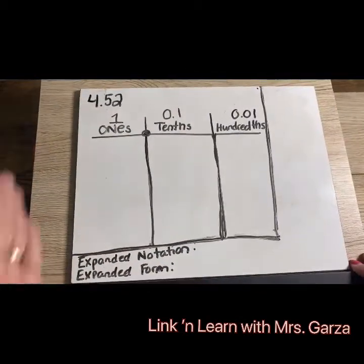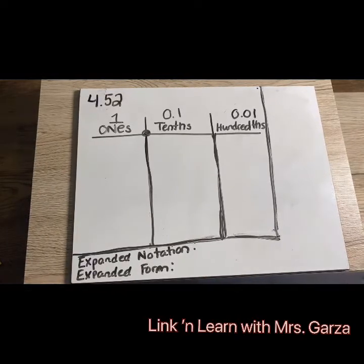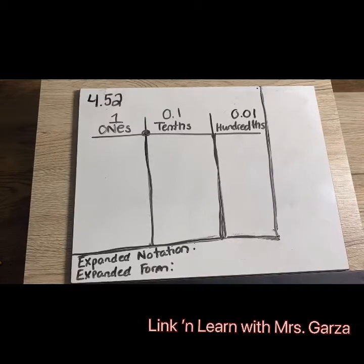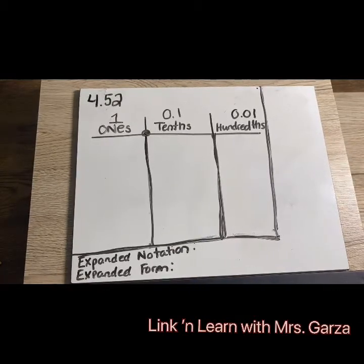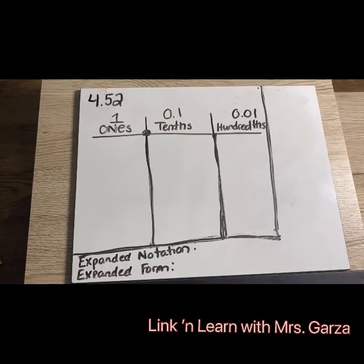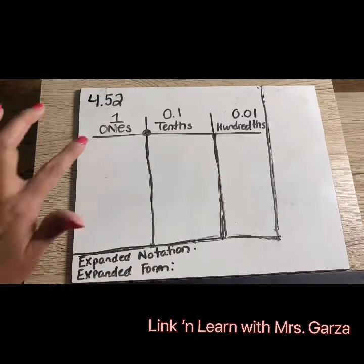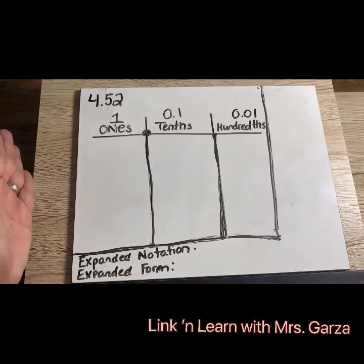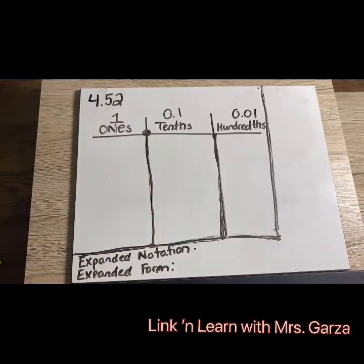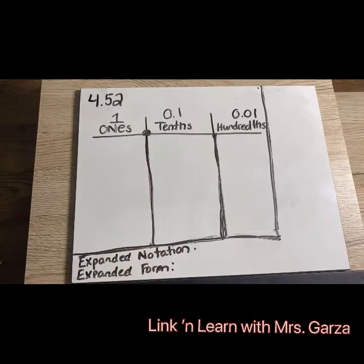I already have something set up here and I have four and 52 hundredths. If I was looking at this and said, oh I have some money — four dollars and 52 cents. So four is my whole, five is in the tenths — it's worth like 50 cents — and then I have two, which is in the hundredths, which is two pennies. I already have it broken down in my place value chart. I have my ones, which is to the left of the decimal — those are going to be all our whole numbers always. So then it would be the tens, the hundreds, and so on.